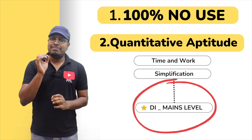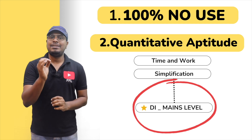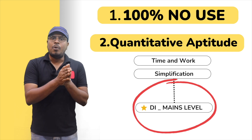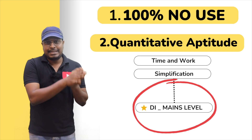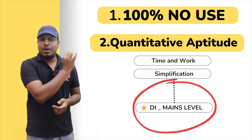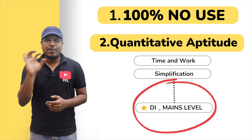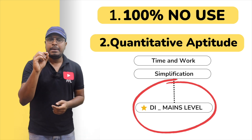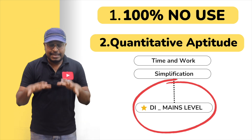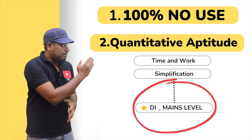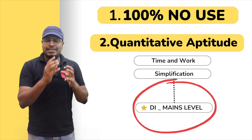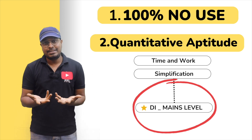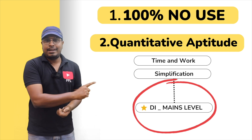Before watching this video, remember one important thing: the same data interpretation question I am going to teach now is available as a test. First visit my website or mobile application — in the quantitative aptitude section, at the last, you can see data interpretation. Inside that, the same question I'm going to teach is available as a test. Write the test first and check your score, whether you're getting 5 out of 5 or can't understand the DI at all.